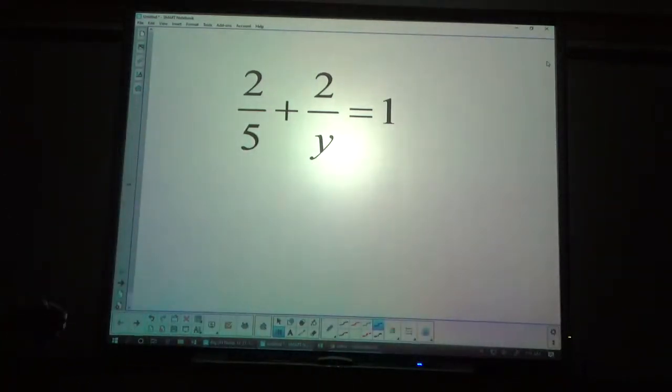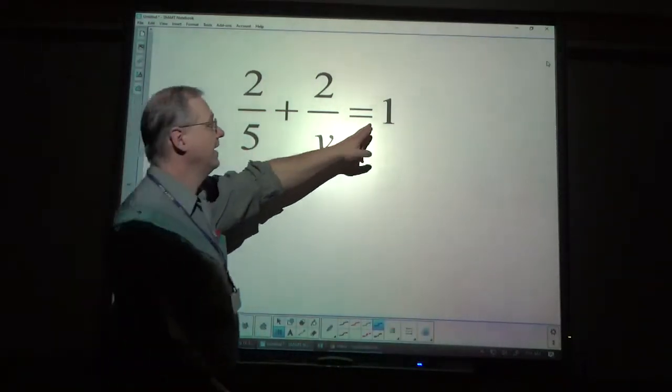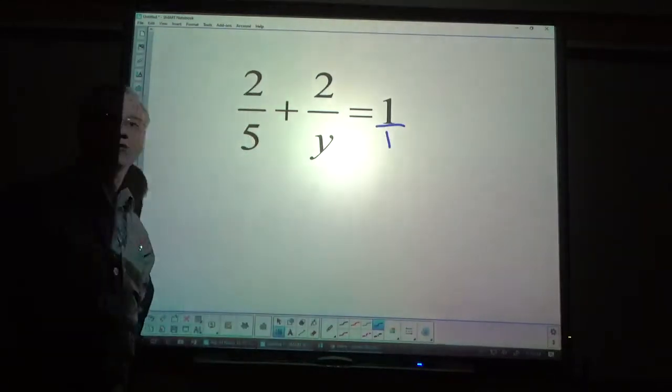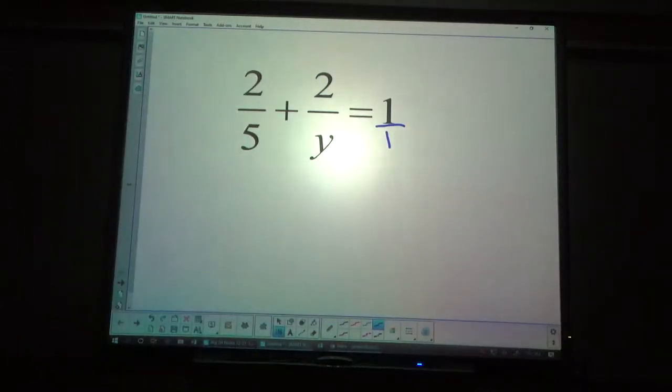In this case, there's a 5, a y, and this could be understood to be over 1. So, there's a 5, a y, and a 1, and the common denominator of those single terms, no addition or subtraction there, is multiplying them together because they have nothing else in common.